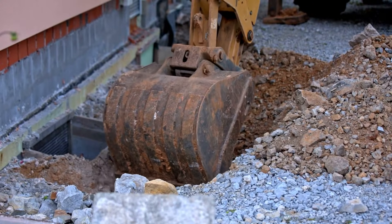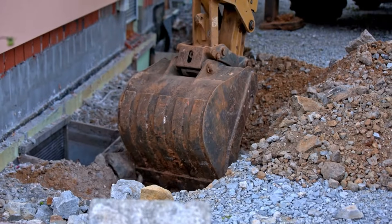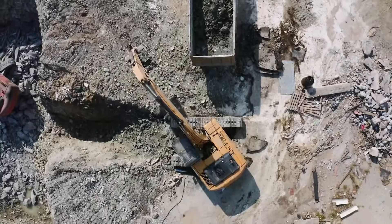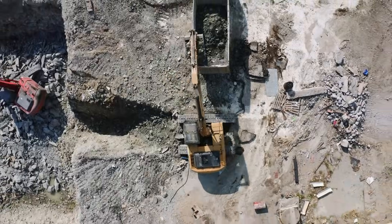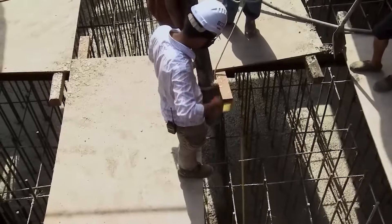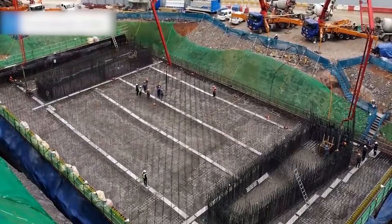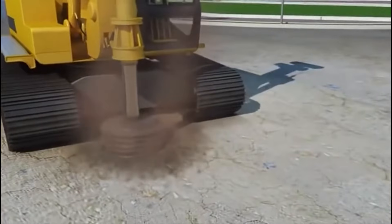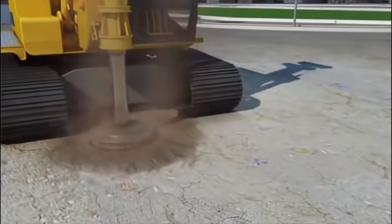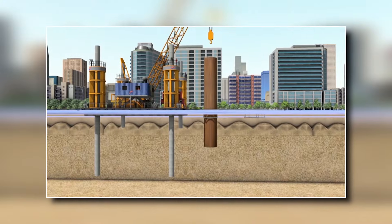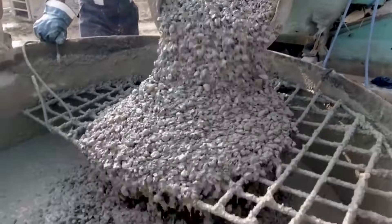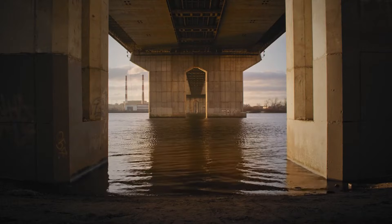The first step in building a foundation is to excavate the area where the foundation will be located. This may involve removing rocks, debris or other obstacles from the site. Once the site has been cleared, the foundation can be constructed. For pile foundations, holes are drilled into the ground and steel or concrete piles are driven into the holes. The piles are then capped with a concrete slab, which provides a stable base for the bridge to rest on.